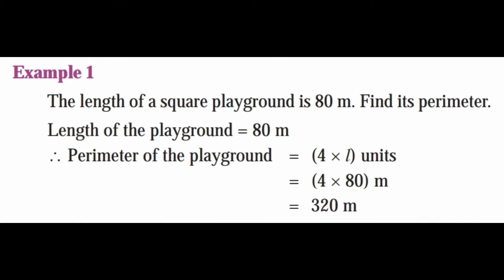Let's see some examples. Example 1: the length of a square playground is 80 meters. Find its perimeter. Given: length of the playground is equal to 80 meters. Therefore, perimeter of the playground is equal to 4 into L, that is 4 into 80, which equals 320 meters.